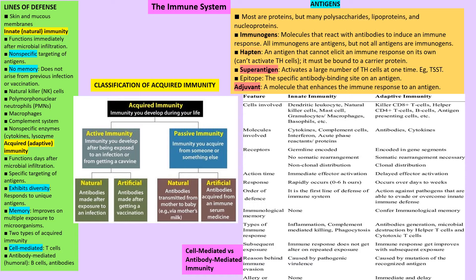Now we come to the topic of immunology. We have different lines of defense — skin and mucous membranes are the first line. We can divide immunity into two types: natural immunity and artificial immunity. Natural immunity is divided into active and passive, and artificial immunity is also divided into active and passive. Natural active immunity is what the patient has on their own — good quality NK cells, macrophages, complement proteins, and active neutrophils, which means the person falls sick less often than others.